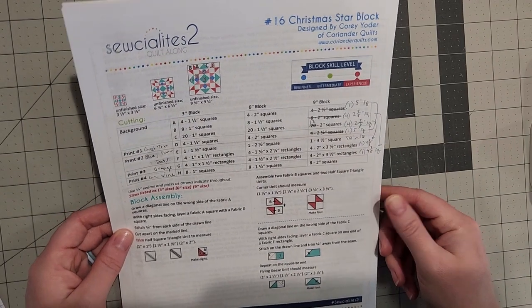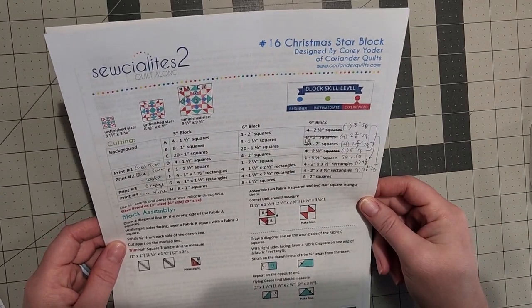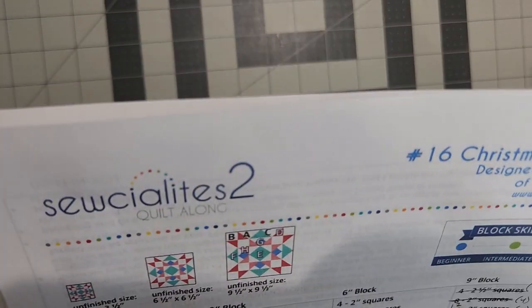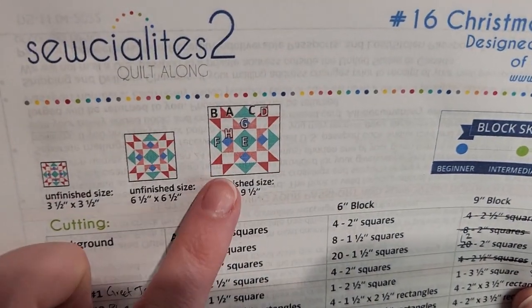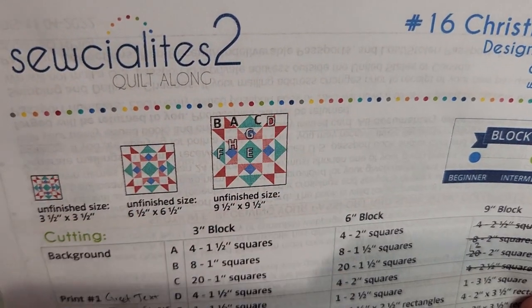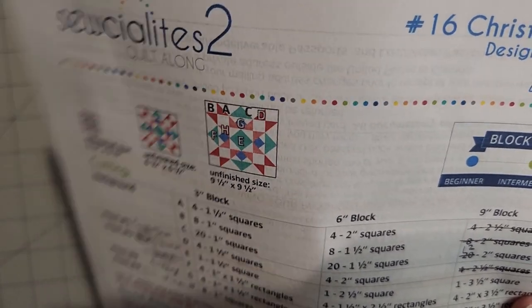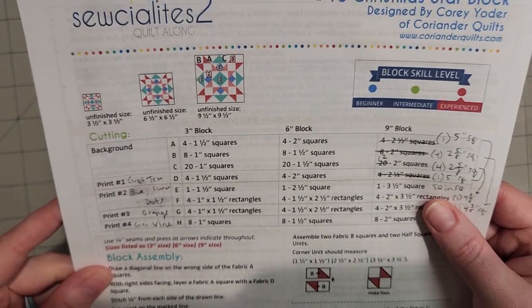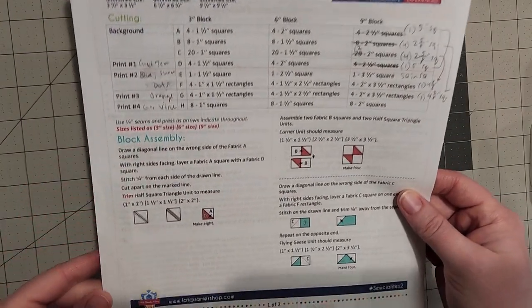All right, so here are my cutting tips on this block. First I'm going to talk about the corner units. In this block you see some half square triangles in each of the corner units and there's eight in total. The pattern will tell you to make them four at a time or two at a time but I like to do that eight at a time.